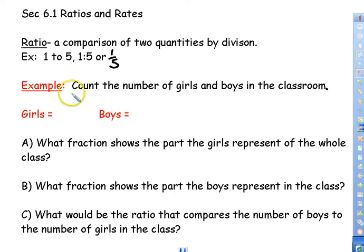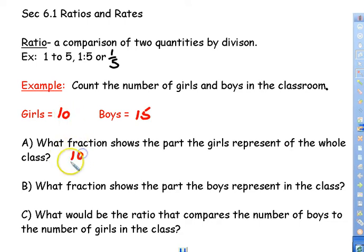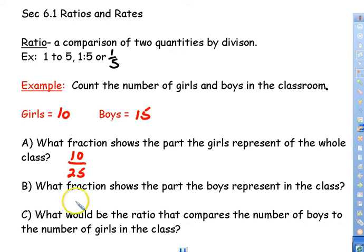For our example, count the number of girls and boys in the classroom. We'll answer: what fraction shows the part girls represent of the whole class? Let's say we have 10 girls and 15 boys. There are 10 girls, and the whole class is 10 plus 15, which equals 25 total students.